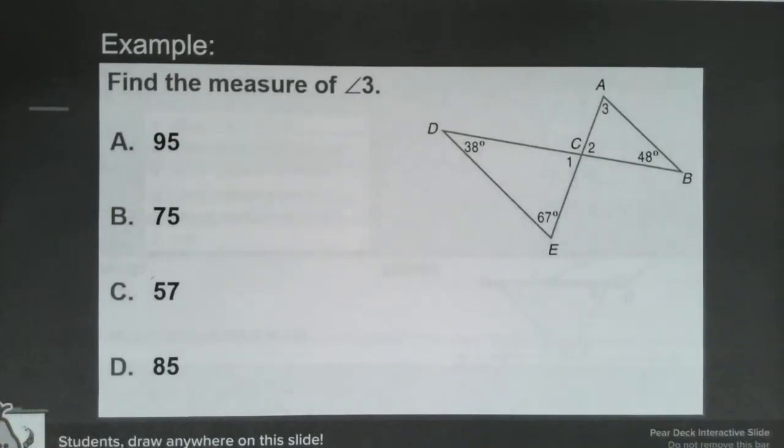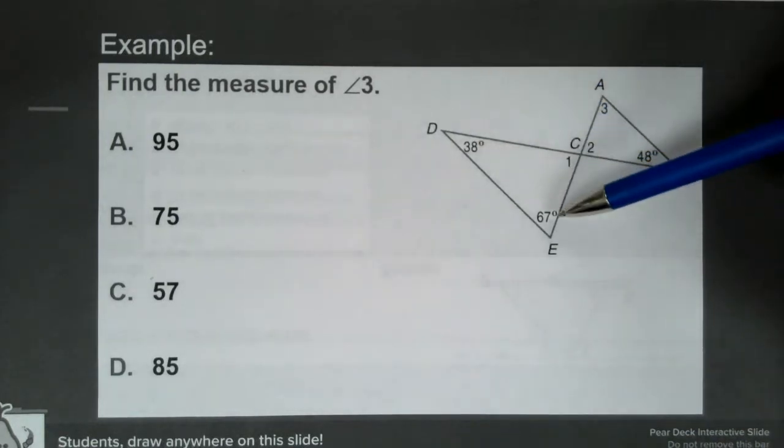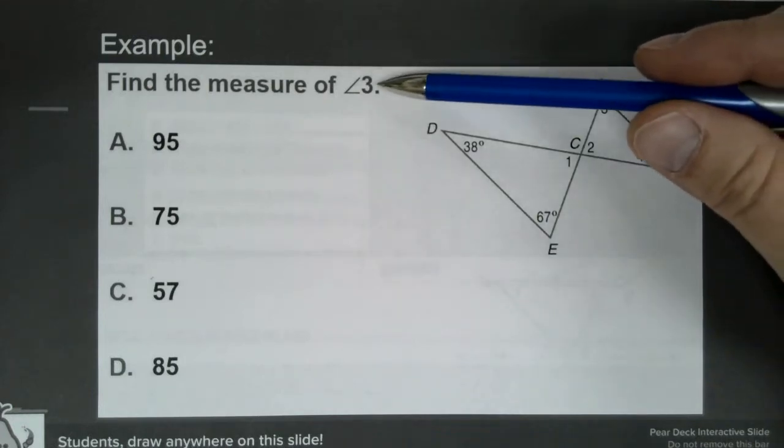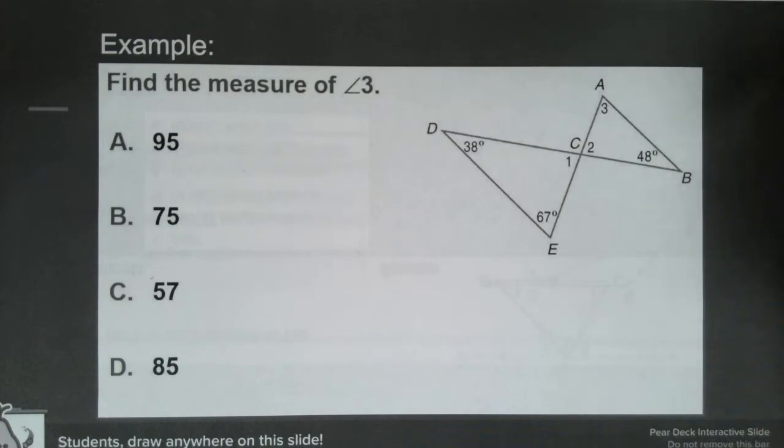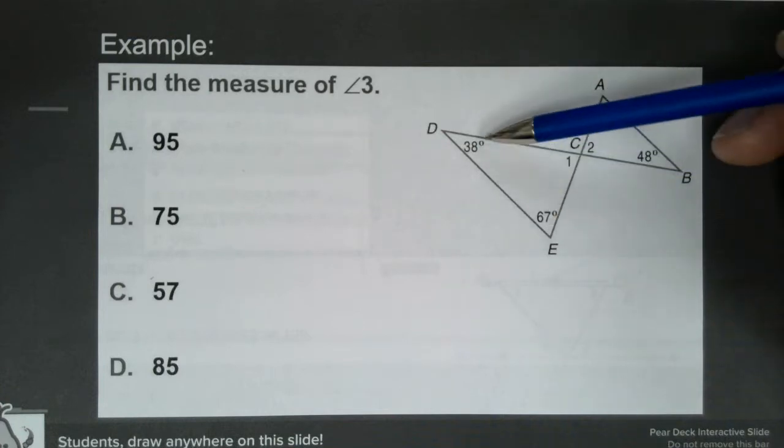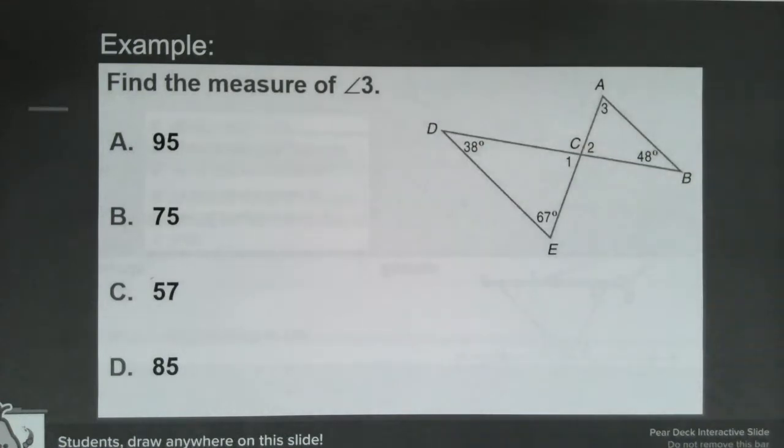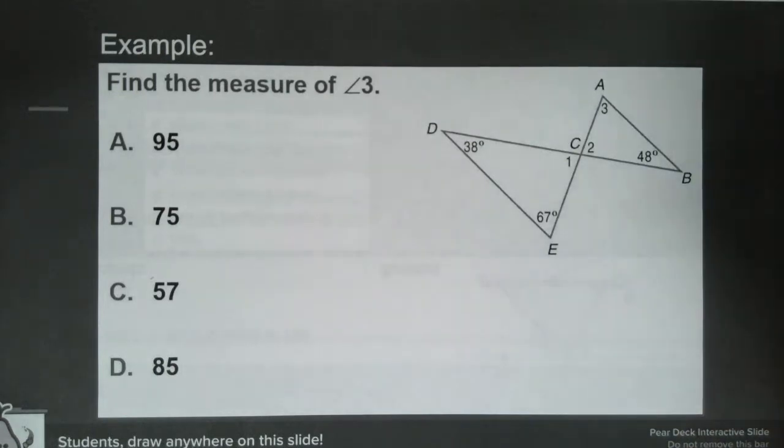Okay, let's look at an example. So here we have a picture. The picture says that angle D is 38 degrees, E is 67, and B is 48. They want us to find the measure of angle 3. So if we know two of the angles in a triangle, obviously we can find the third by adding them together and subtracting from 180. So in this particular problem, can somebody tell us what the measure of angle 1 would be? Okay, so I've got a few people that have typed in—angle 1 would be 75, and that's correct.